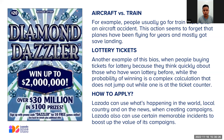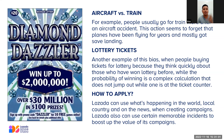For example, people buying lottery tickets quickly think about those who have won the lottery before, while the probability of winning is a complex calculation. It's not only bad memories — good memories also drive decisions. So Lazada can use what's happening in the world, local countries, or the news when creating campaigns, and can use certain memorable incidents to boost the value of its campaigns.